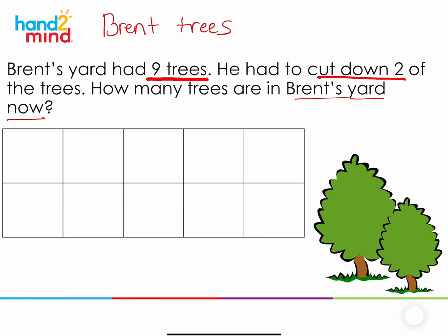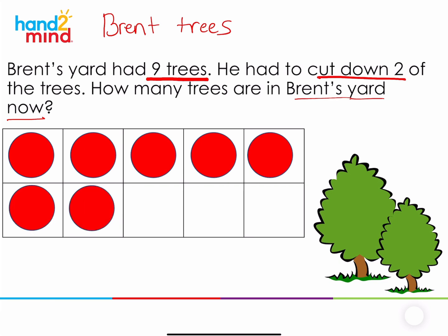To begin, we want to show how many trees he started with. If you have some counters or a 10 frame at your house, you can use that. If you don't, then you can follow along with us. The first thing we want to do is show how many we started with. We started with nine trees. One, two, three, four, five, six, seven, eight, nine. So now we have nine trees.